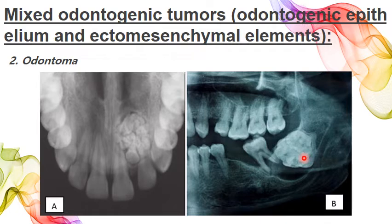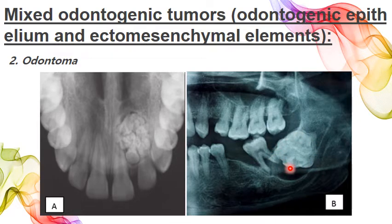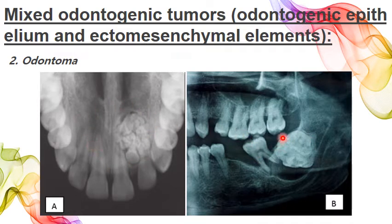Odontomas have two subtypes: compound odontoma, in which we see multiple small tooth-like structures (denticles), and complex odontoma, which appears as irregular masses of dentine and enamel with no anatomic resemblance to a tooth. Compound odontomas are slightly more common and predominantly seen in the anterior maxilla, whereas complex odontomas are seen in the posterior mandible or maxilla.